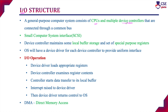The CPU and multiple device controllers are connected through a common system bus. Everything will be connected to a common system bus. We have already seen in the computer system operation how the CPU, device controllers, and memory are connected through the system bus. Each device controller is in charge of a specific type of device.